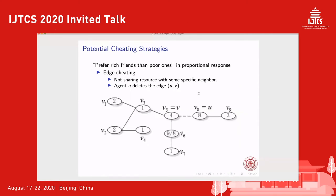The second cheating strategy is called edge cheating. This is an intuitive strategy from the proportional response allocation rule. Consider one agent connecting to two neighbors, where one neighbor has a very large amount of resource and the other has very small. The agent may think: I prefer a rich friend over a poor friend. So he will not share resource with the poor neighbor. Formally in the network, this means the agent will delete one of his edges with his neighbors.